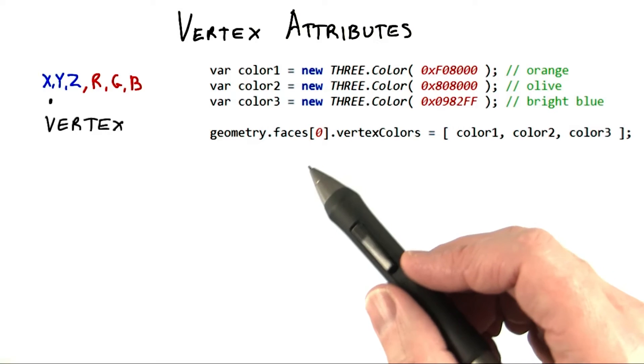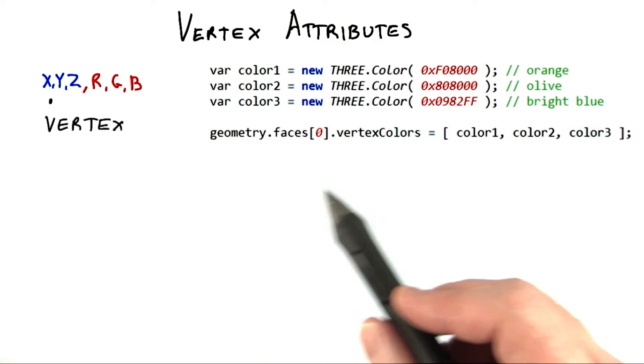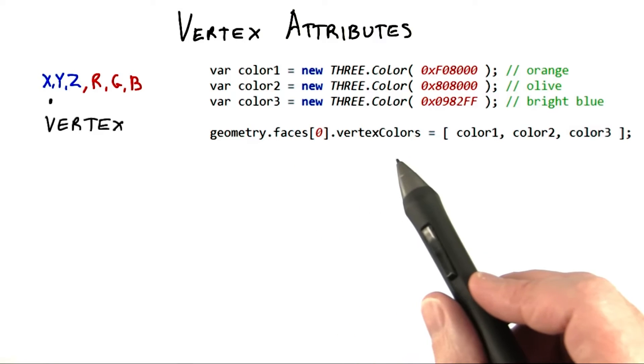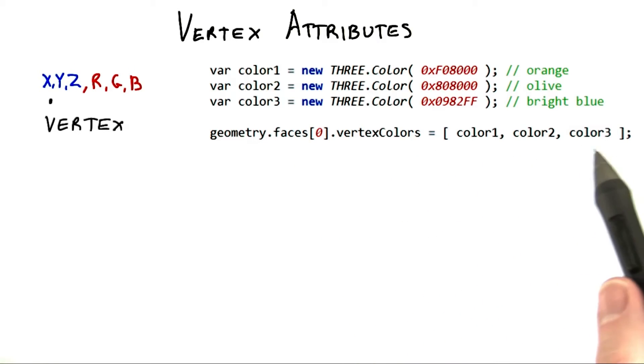To then add a color per vertex, use the following kinds of code after defining the triangle's face. This last line adds the RGB color attribute by specifying a color at each vertex of the face.